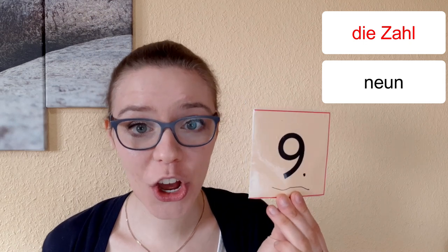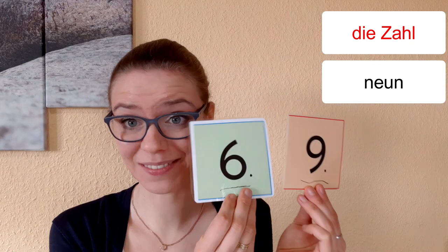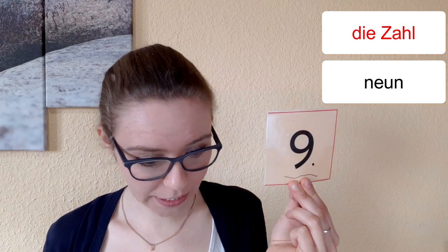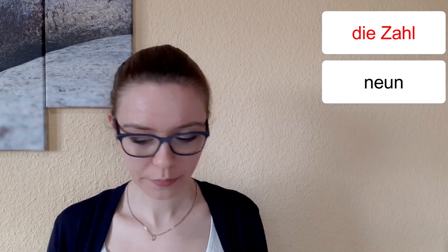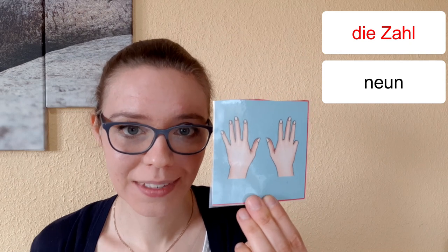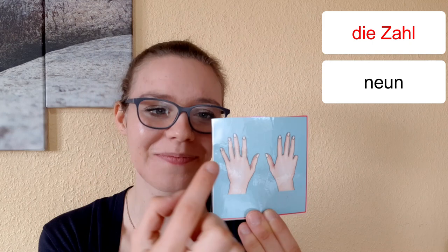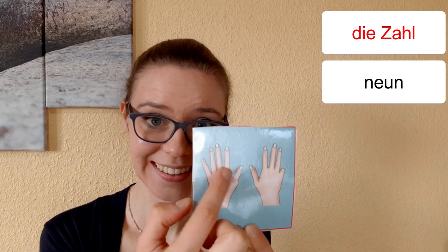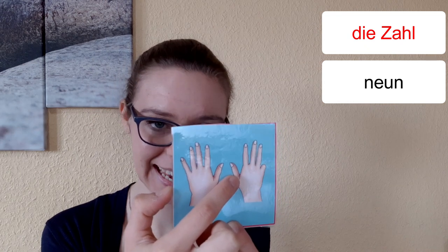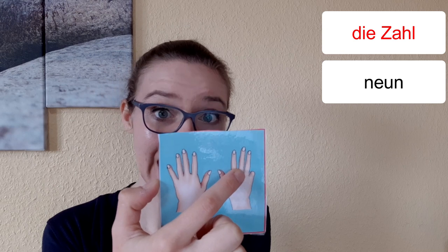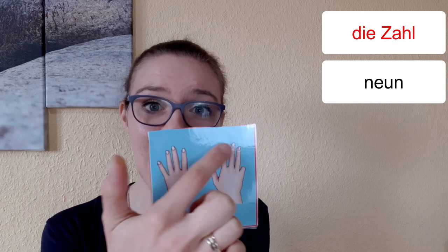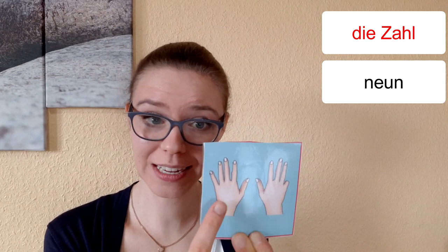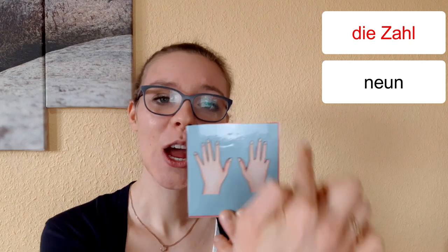Die nächste Zahl ist die Neun. Es ist nicht die Sechs. Das ist die Sechs. Das ist die Neun. Sechs und Neun. Neun Finger. Wo sind neun Finger? Hier. Das sind neun Finger. Kannst du die Finger zählen? Eins, zwei, drei, vier, fünf, sechs, sieben, acht, neun. Neun Finger. Und ein Finger ist noch nicht da.